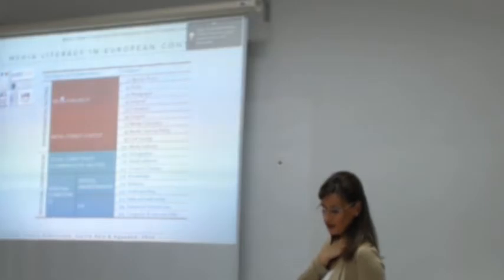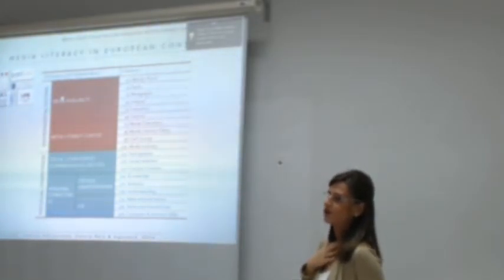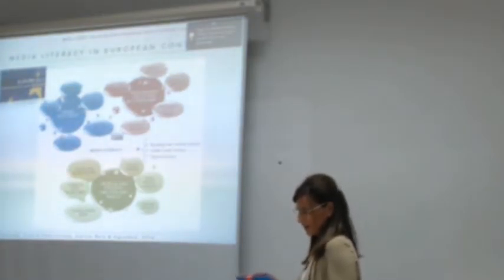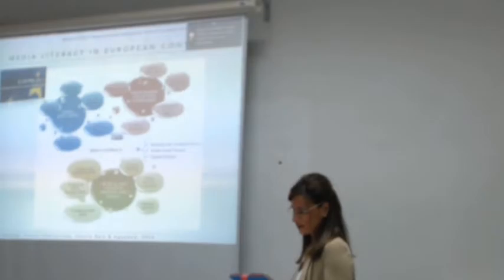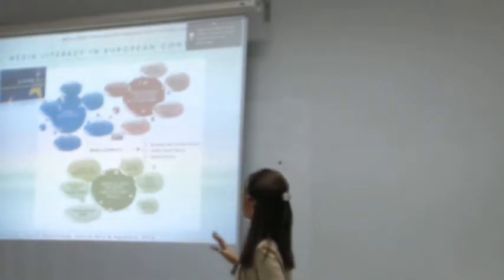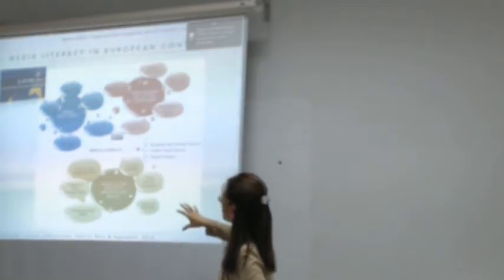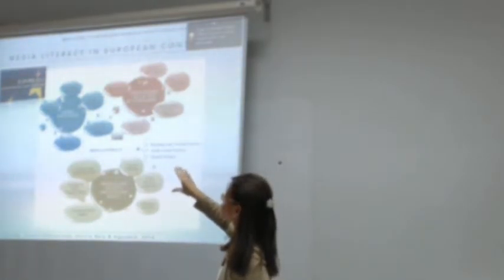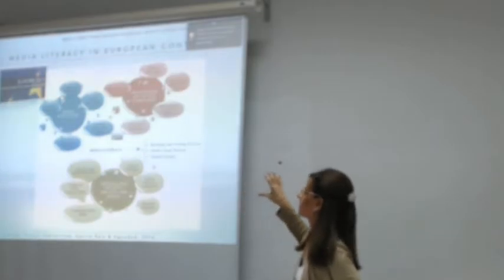Furthermore, when we try to define and conceptualize media literacy, other elements may be considered, as we can see in this table. In this figure, we have three elements related to media literacy, founded in European Strategy 2020. These three main dimensions are: participation and active citizenship, critical and creative abilities and skills, and media education. This is why we are analyzing this issue — because of the necessity of education in this field.